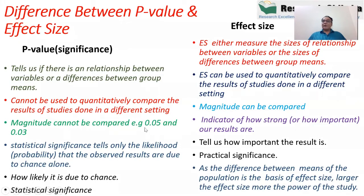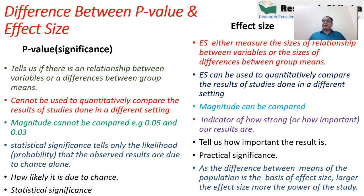Statistical significance tells only the likelihood that observed results are due to chance alone. Effect size, however, tells you the magnitude of the test. If it is a correlation test, effect size tells you the actual correlation between the two variables and we can compare magnitudes across studies. Effect size in one sentence: effect size gives you the true value — or true population value — that can be calculated from that study.